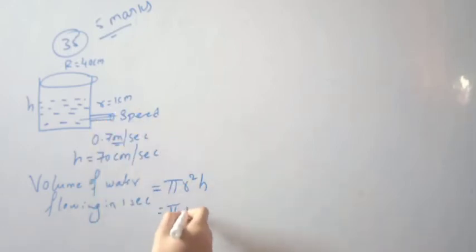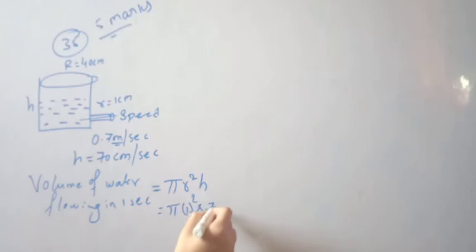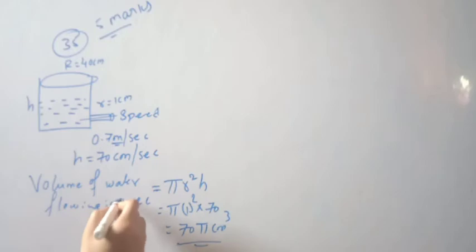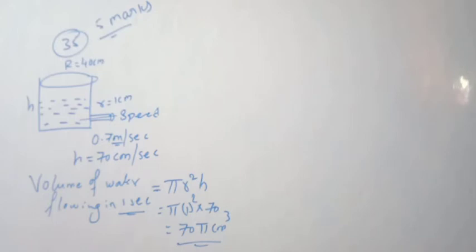If you add pi, you can cancel it later. R is given as 1 cm (radius of pipe), so R squared is 1. The height covered per second equals the flow speed: 70 centimeter per second. So volume per second equals pi times 1 squared times 70, which equals 70 pi cubic centimeters per second.